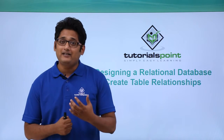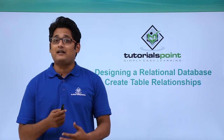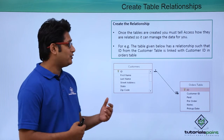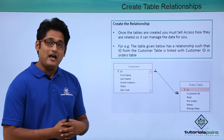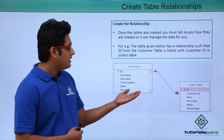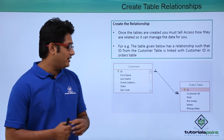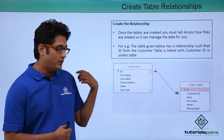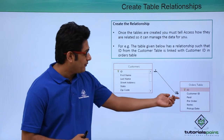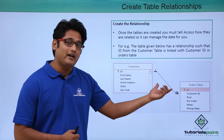Now once you have created a table, it is necessary to tell Access how the table data is interconnected. As you can see in my next screen, I have two tables: one is the customer table and another one is the order table. I have created a relationship between the customer table ID and the orders table customer ID. These two are interconnected.